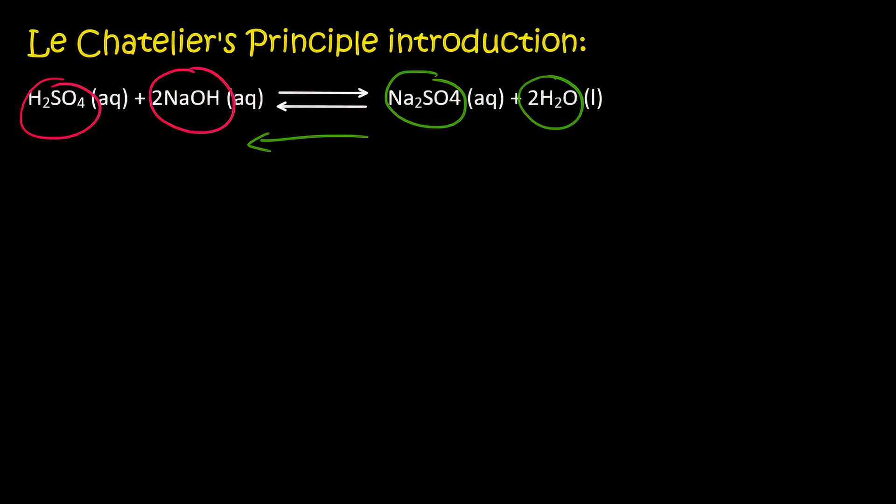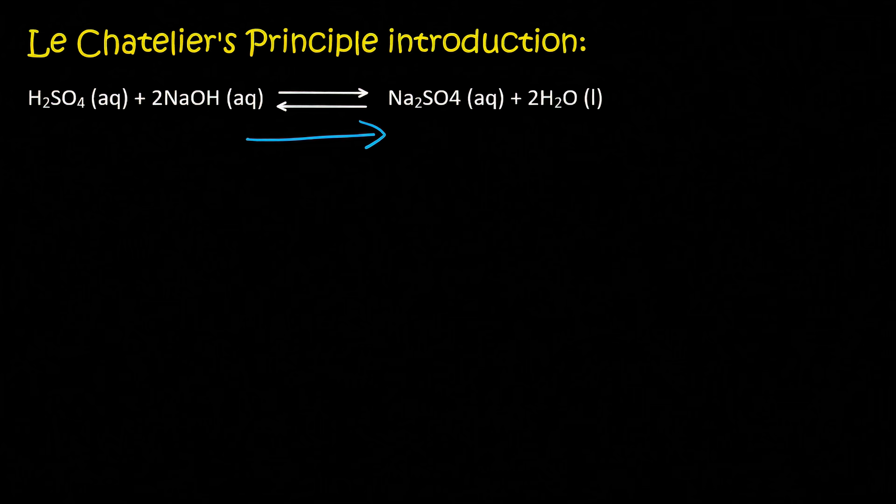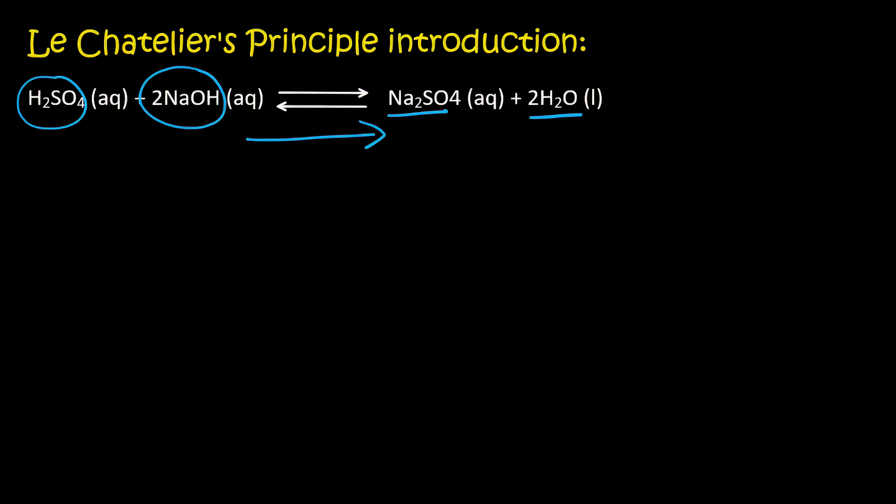So what we're trying to do is we're trying to use up this one and so our reaction should go in the forward direction so that this one and this one become less and then we produce more of these two. So which reaction is going to be favored if we add more NaOH? The forward reaction.